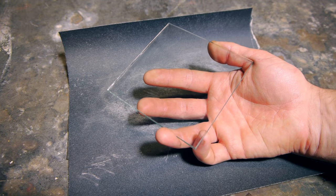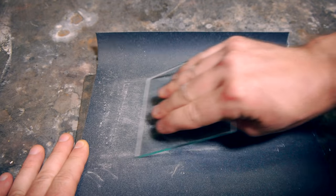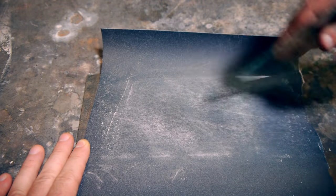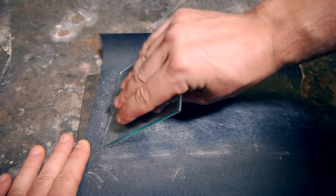I went to a local hardware store and asked to have a four inch square cut from a sheet of glass. To keep from cutting myself, I used a piece of sandpaper to blunt the edges.